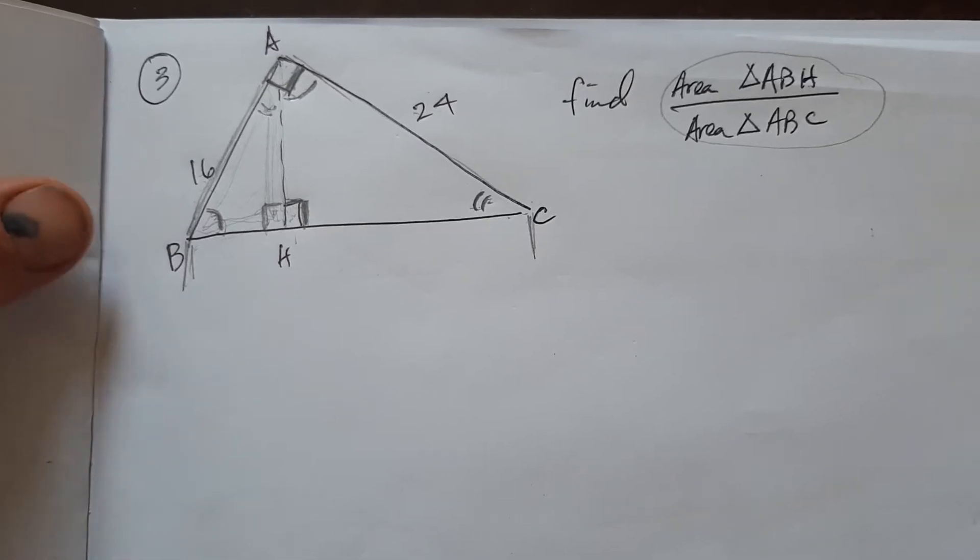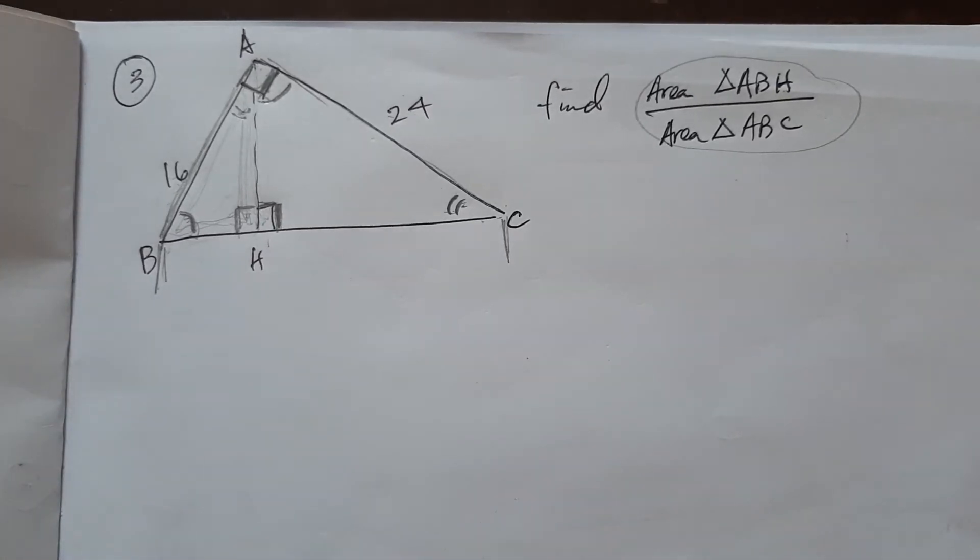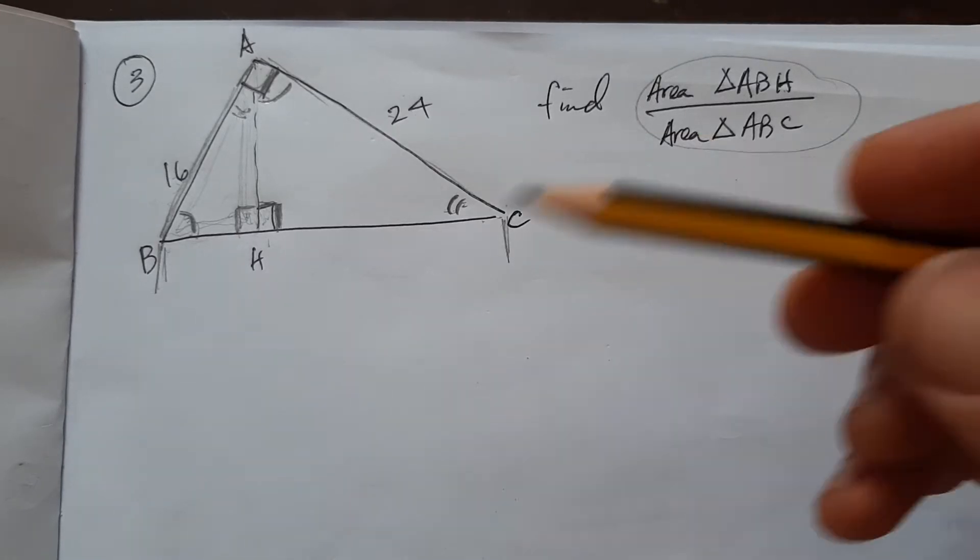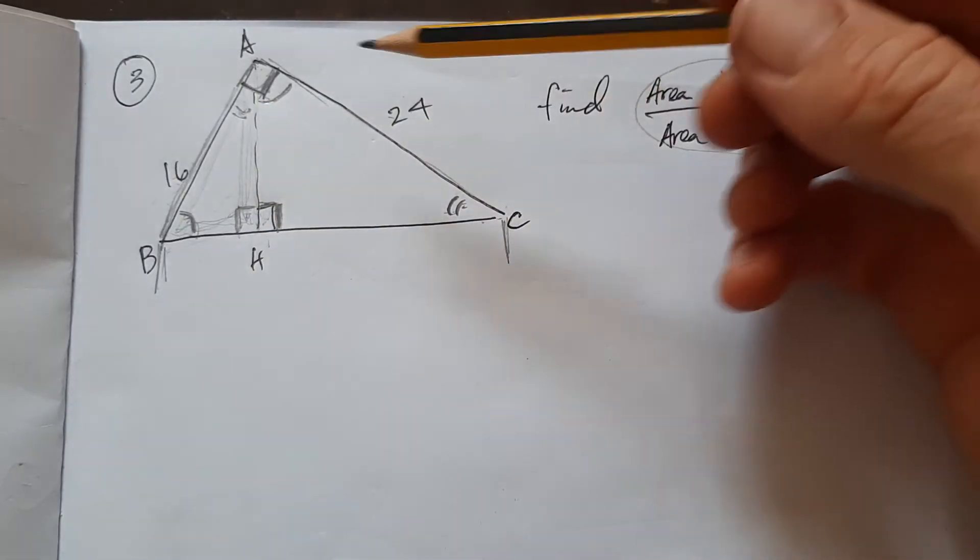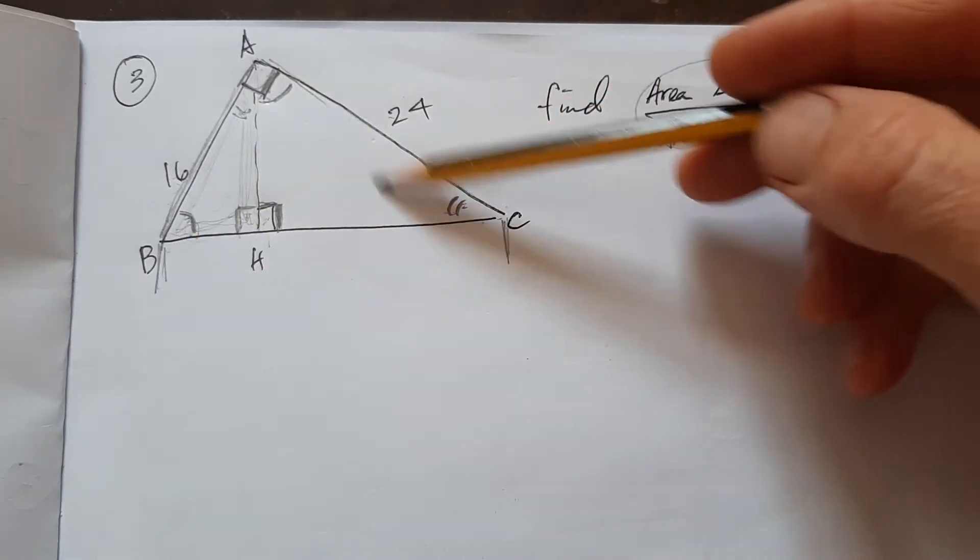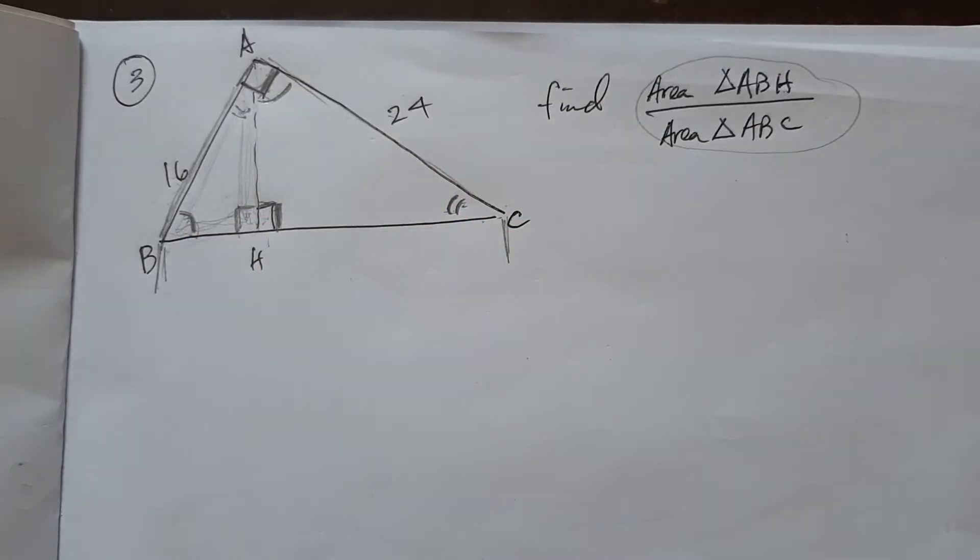Okay, next one here, number three. Find the ratio of the areas of the small triangle, small right triangle, to the ratio of the big triangle. Pause this video, you do it, and then I'll do it.